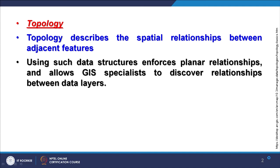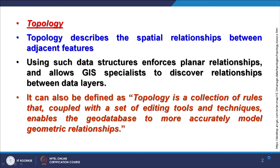Everything is stored in GIS in planar form, and therefore topology enforces planar relationships. Using this topological concept, vector data — especially polygon data — enforces planar relationships and allows GIS specialists to discover relationships between data layers. Not only within one layer, but different layers can also be analyzed. Topology is basically a collection of rules that, coupled with editing tools and techniques, enables the geodatabase to more accurately model geometric relationships.